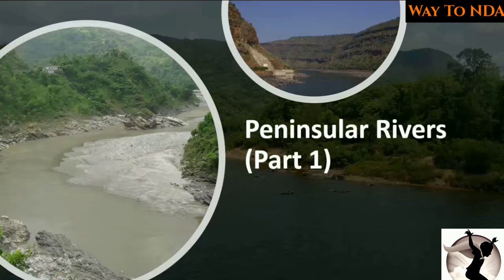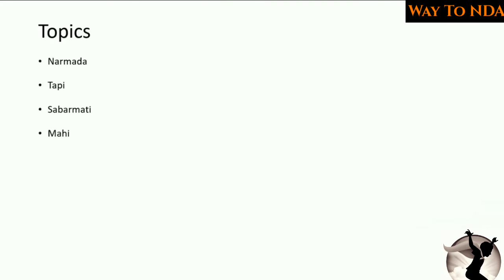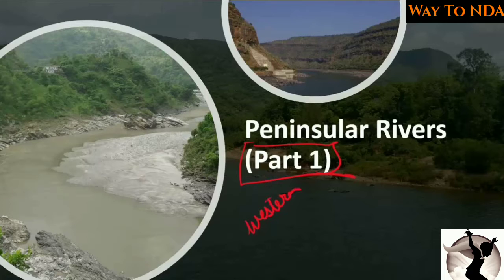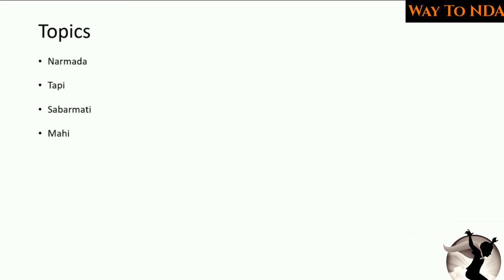I want to study about the peninsular rivers — the rivers which are flowing in the peninsular area, that is the Indian Peninsula. In peninsular rivers part one, we are going to mainly focus on the western flowing rivers, that is the rivers which are flowing in the western direction and meeting the Arabian Sea.